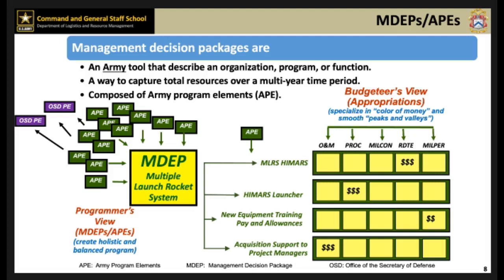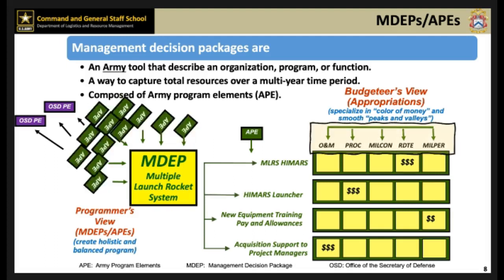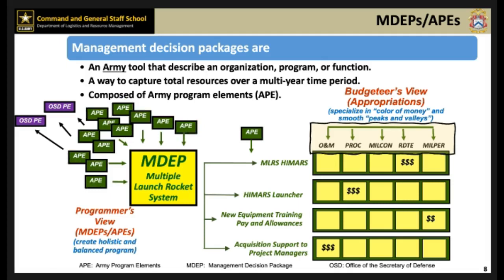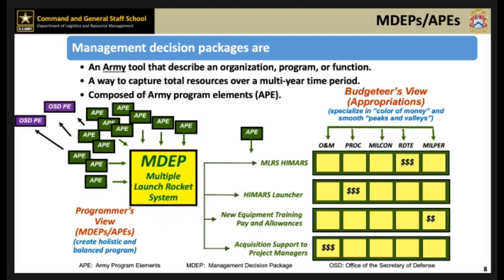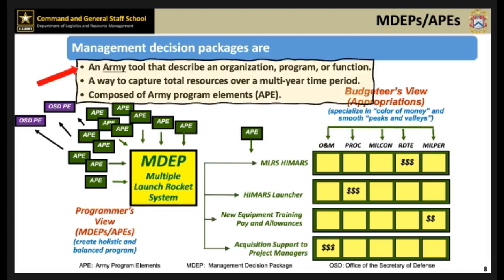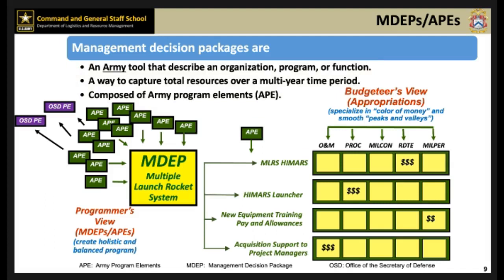This slide shows an example of an MDEP for multiple launch rocket systems. MDEPs are composed of Army Program Elements, or APEs, corresponding to multiple appropriations. APEs can contain multiple appropriations, but it is not common. The MDEP specifies the military and civilian manpower and dollars associated with the program. MDEPs are an Army-developed management structure — not a DOD tool. Collectively, MDEPs account for all Army resources and describe the capabilities programmed over a multi-year period for the active Army, Guard, Reserve, and civilian workforce. An individual MDEP describes a particular organization, program, or function, and applies uniquely to a resource management area.